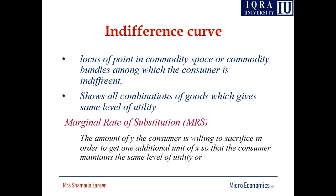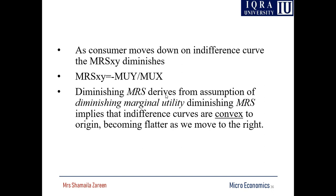A typical indifference curve, as I showed in the previous lecture and will show in this lecture, is convex. The reason the indifference curve is convex is because of the marginal rate of substitution. The marginal rate of substitution is the amount of y the consumer is willing to sacrifice in order to get an additional unit of x, such that the consumer maintains the same level of utility. As the consumer moves down the indifference curve, the marginal rate of substitution between x and y diminishes, and it can be written as marginal utility of y divided by marginal utility of x.